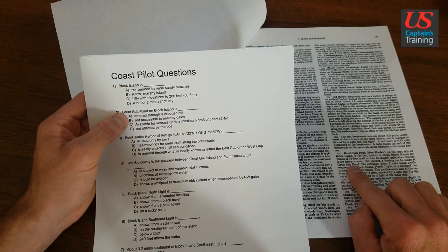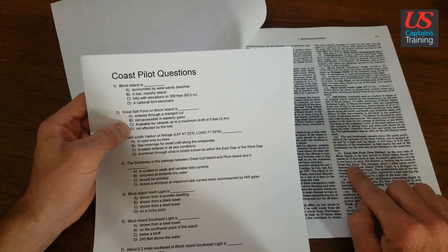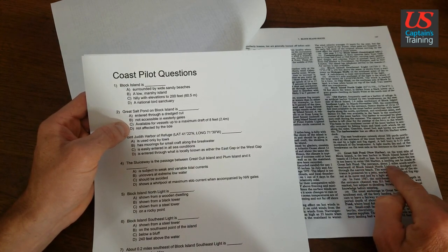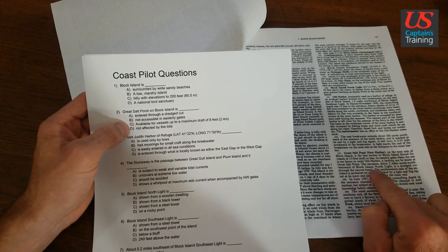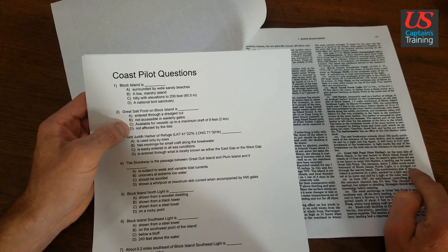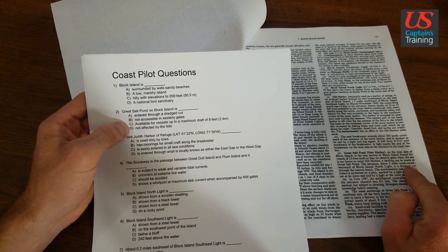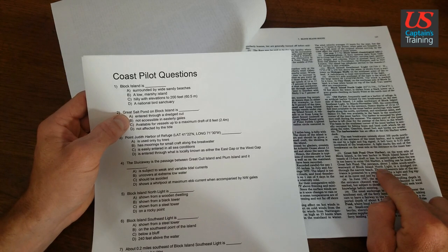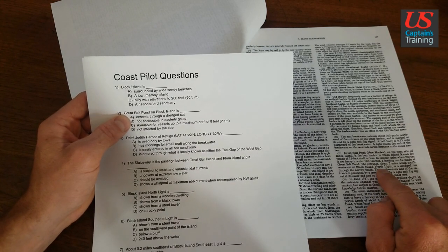Now we have two left: entered through a dredge cut, or not affected by tide. Let's keep reading. The entrance, about two miles south-southwest of Black Island Northlight, is a dredge cut. Look at that, the entrance is a dredge cut through a narrow beach. So I would say that's the one: entered through a dredge cut.